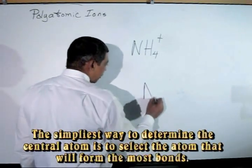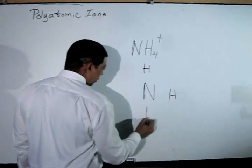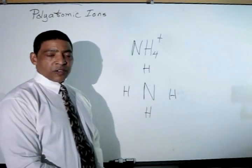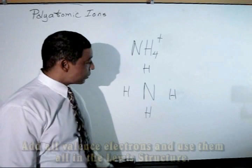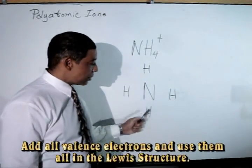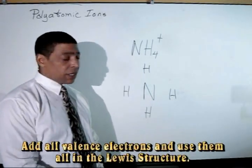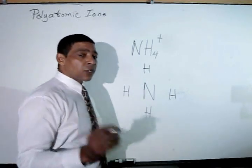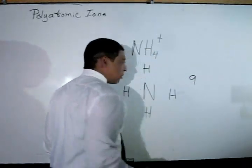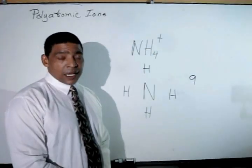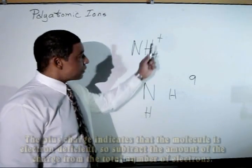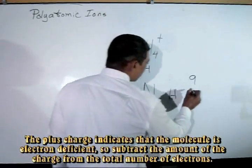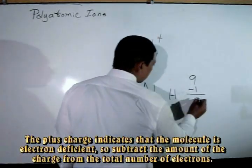So we place a nitrogen surrounded by four hydrogens. The total number of electrons available for bonding may be determined as follows: each hydrogen possesses one valence electron, and the nitrogen possesses five valence electrons. This gives a total of nine electrons available for bonding. However, the charge of the ammonium ion is a plus one, which means we must subtract one electron from our total, leaving eight.